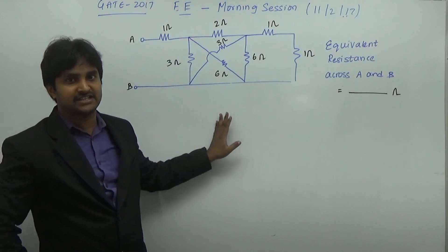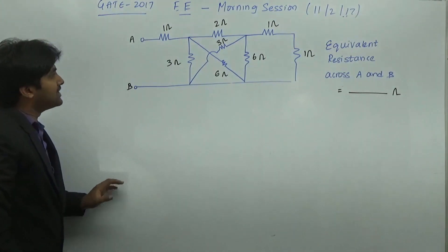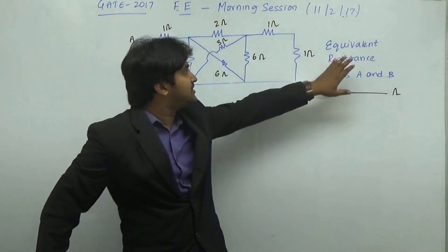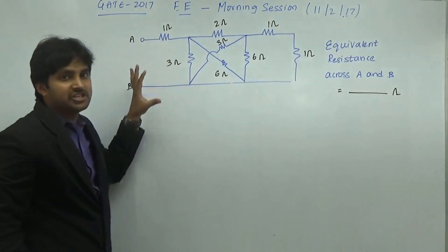This particular question is from network analysis, it is a very simple question. What is asked here is we have to find the equivalent resistance across A and B for this particular circuit.